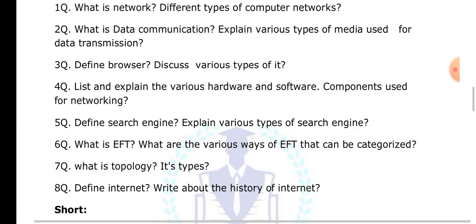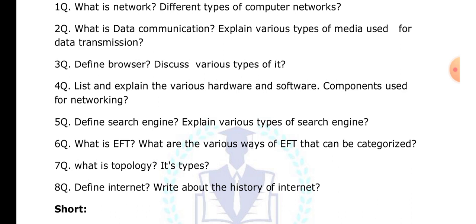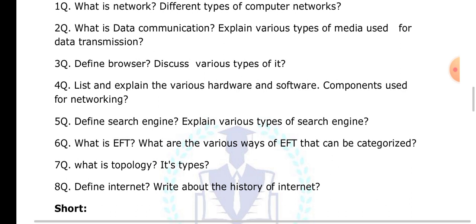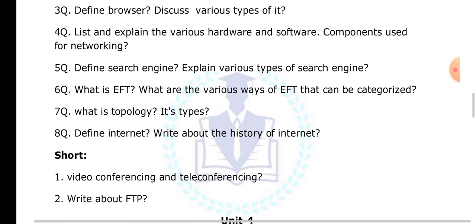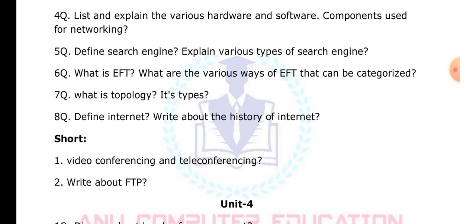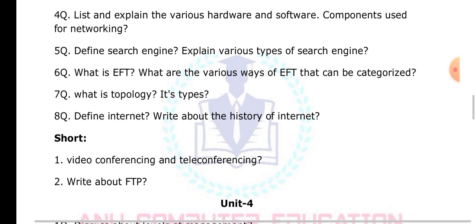Define internet and write about the history of the internet. A globally connected network of networks is known as the internet. The original name of the internet is ARPANET, which was later renamed as the internet. You have to write about the history of the internet. For short answers, also cover video conferencing, teleconferencing, and FTP.